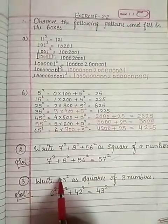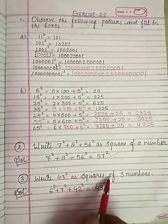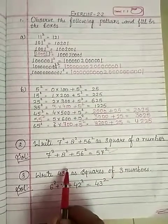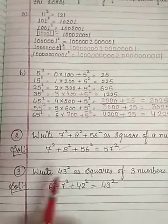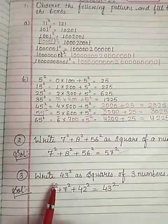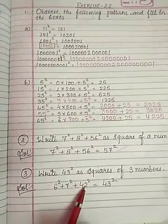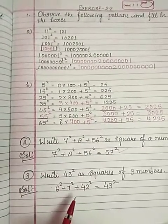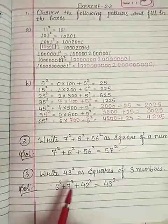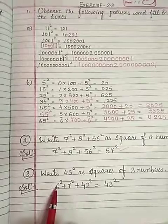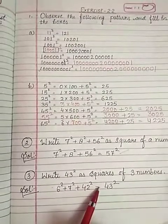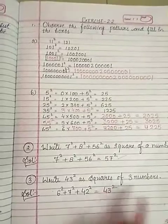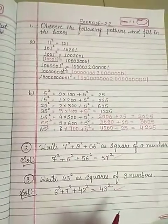Write 43 square as square of 3 numbers. 43 square plus 7 square — this follows the same pattern question.